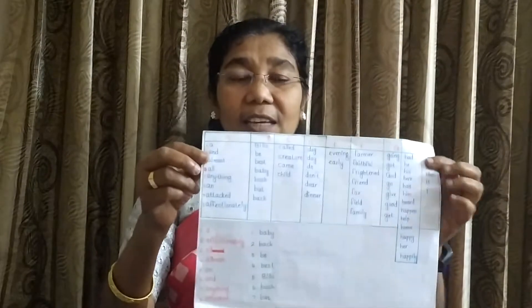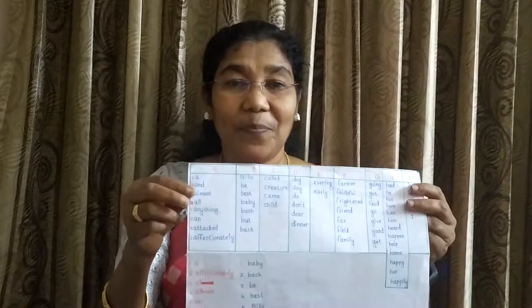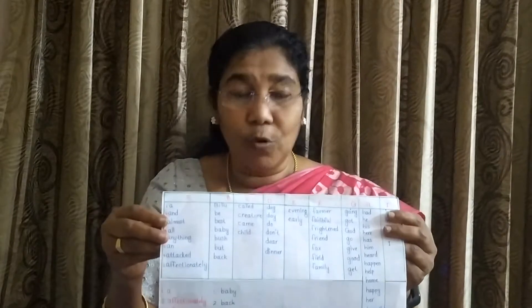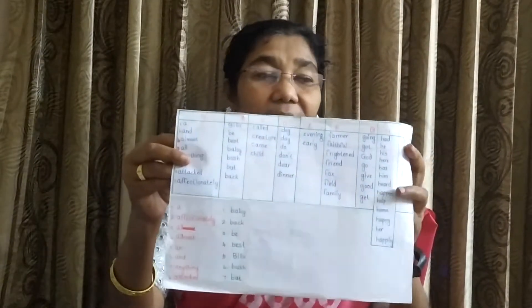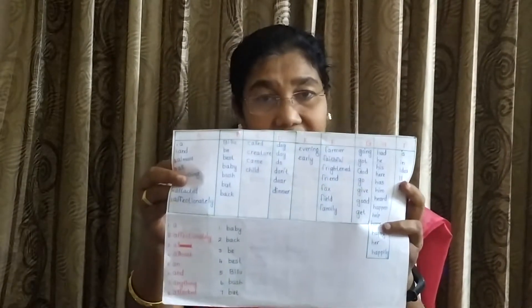Next, you rearrange the words in alphabetical order. Take the words beginning with A. Can you read the words? Yes — and, almost, all, anything, and attach, affectionately. These are the words beginning with A in this lesson.